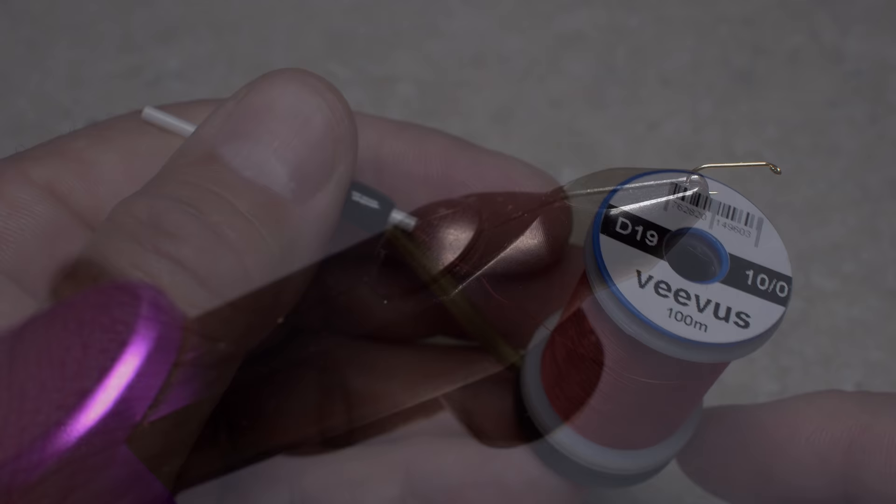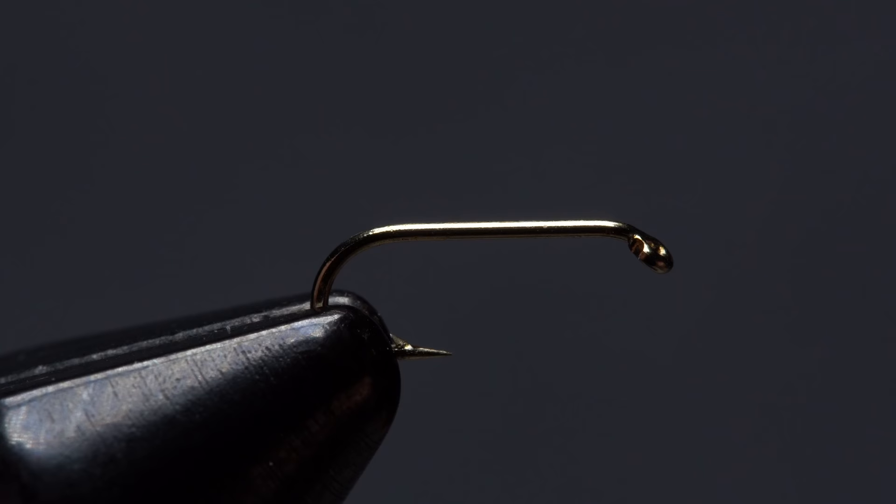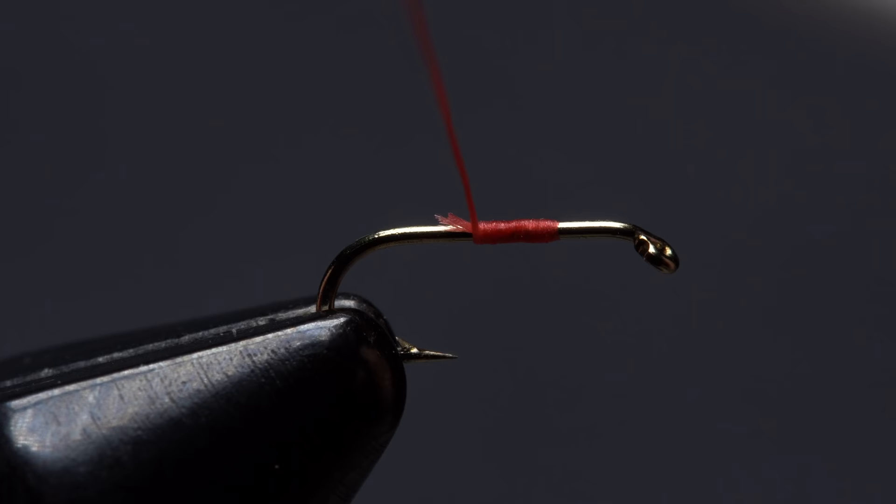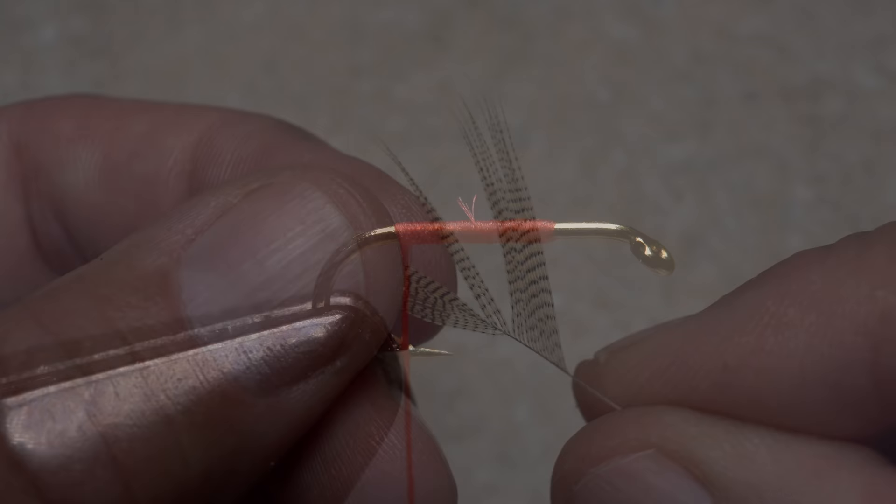For thread I've loaded a bobbin with a spool of red Vivas 10-aught. Get your thread started on the hook shank leaving a two eye length space behind the eye. Take a few wraps rearward before snipping off the tag. Continue taking thread wraps all the way back to the start of the hook bend.